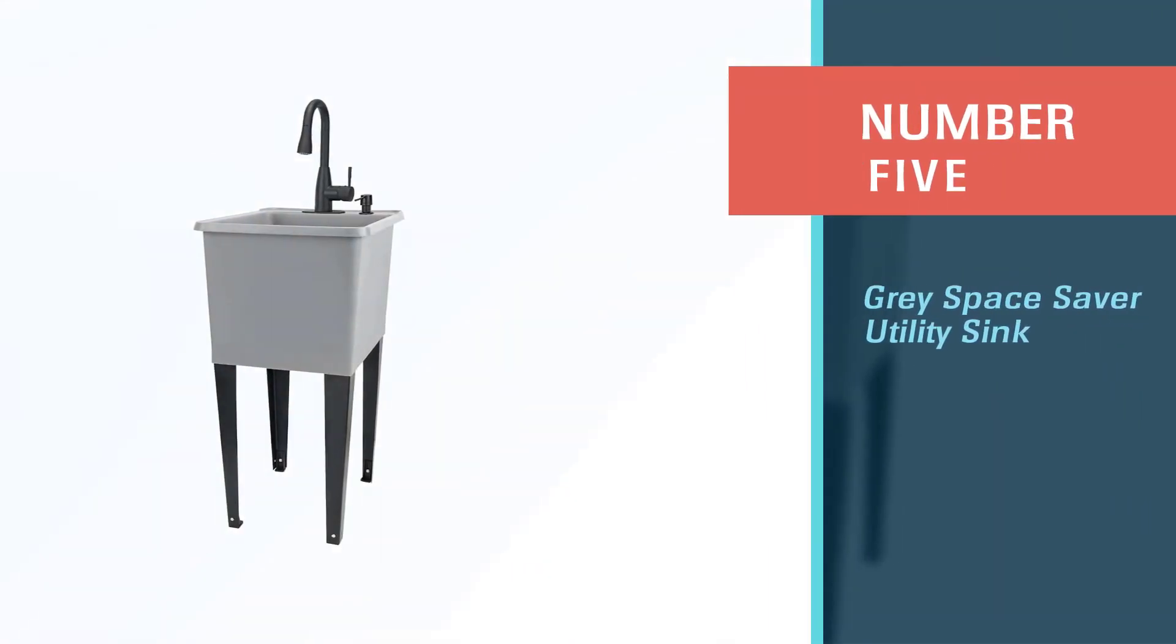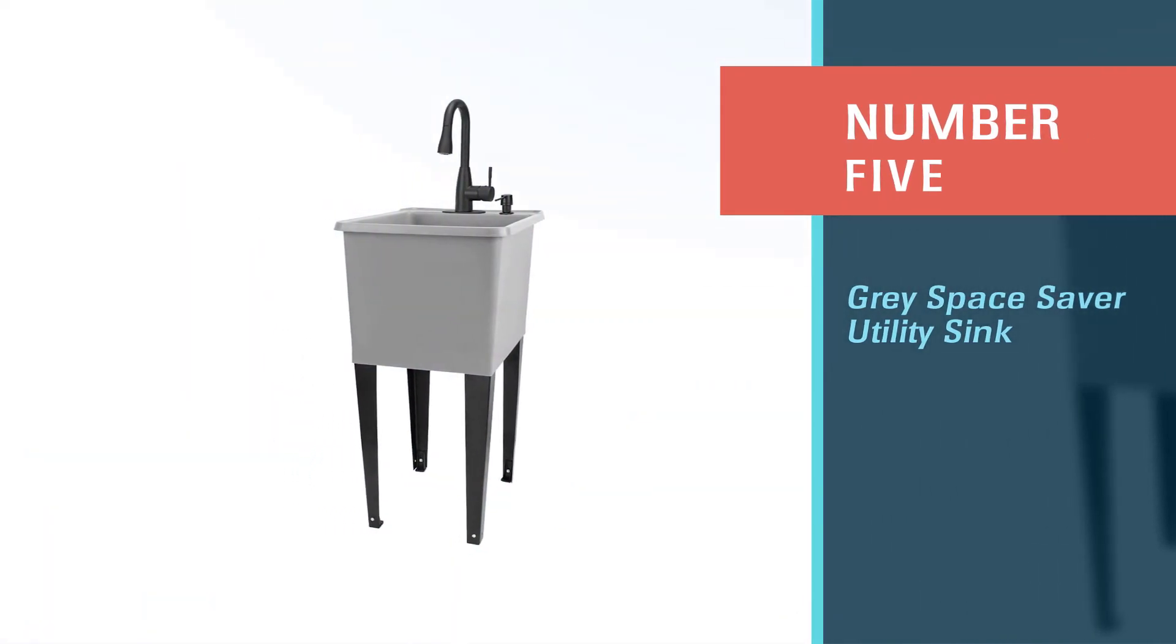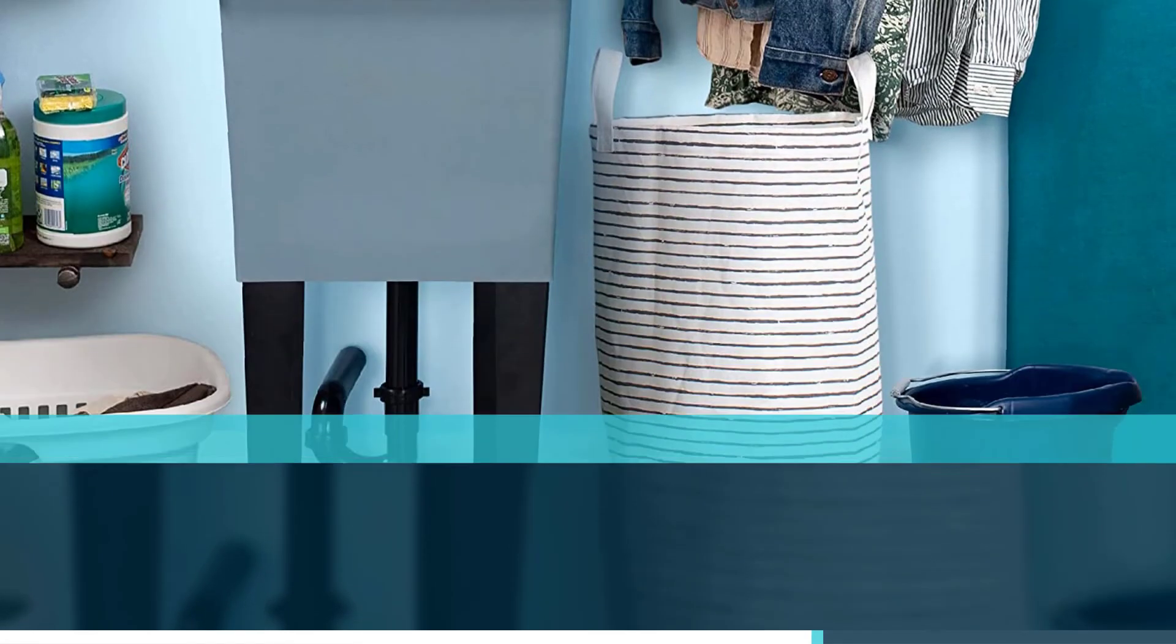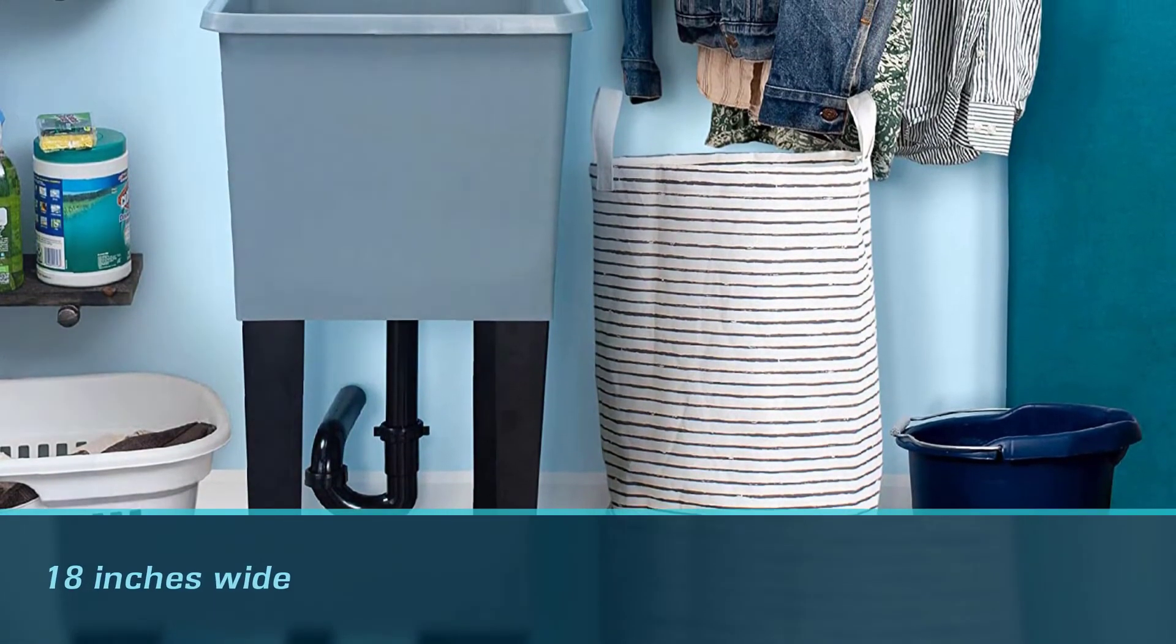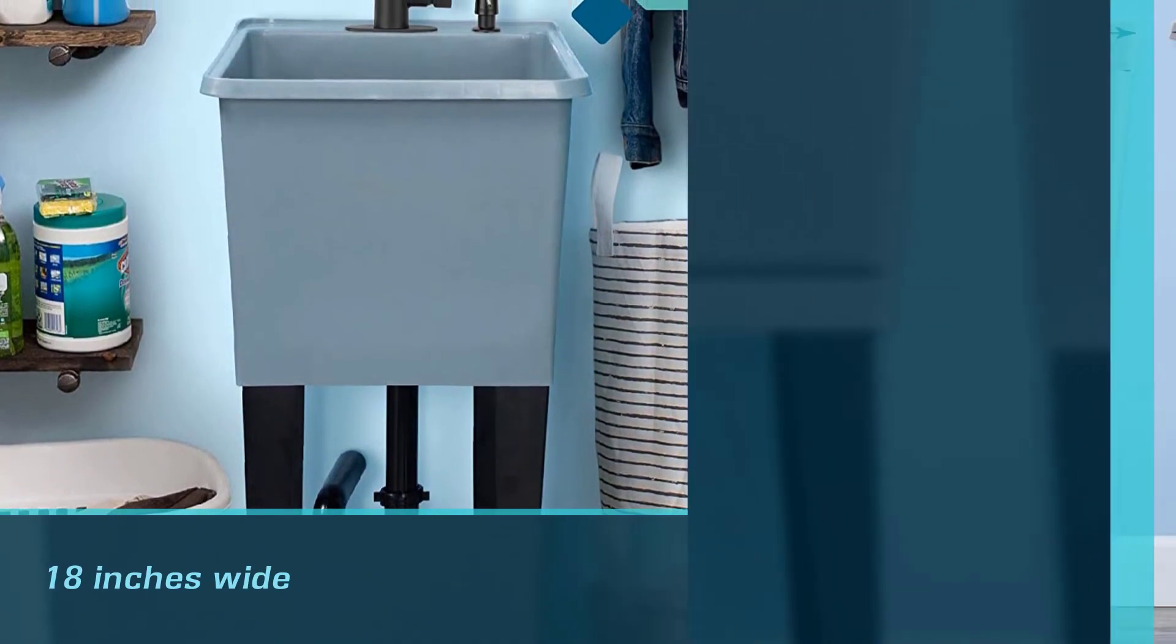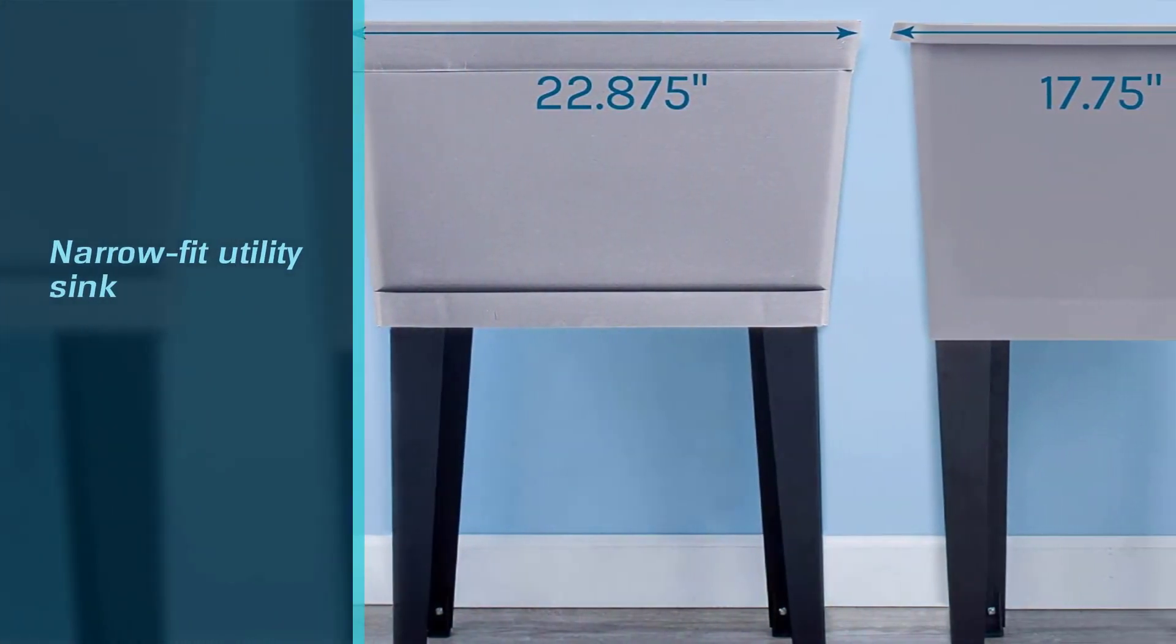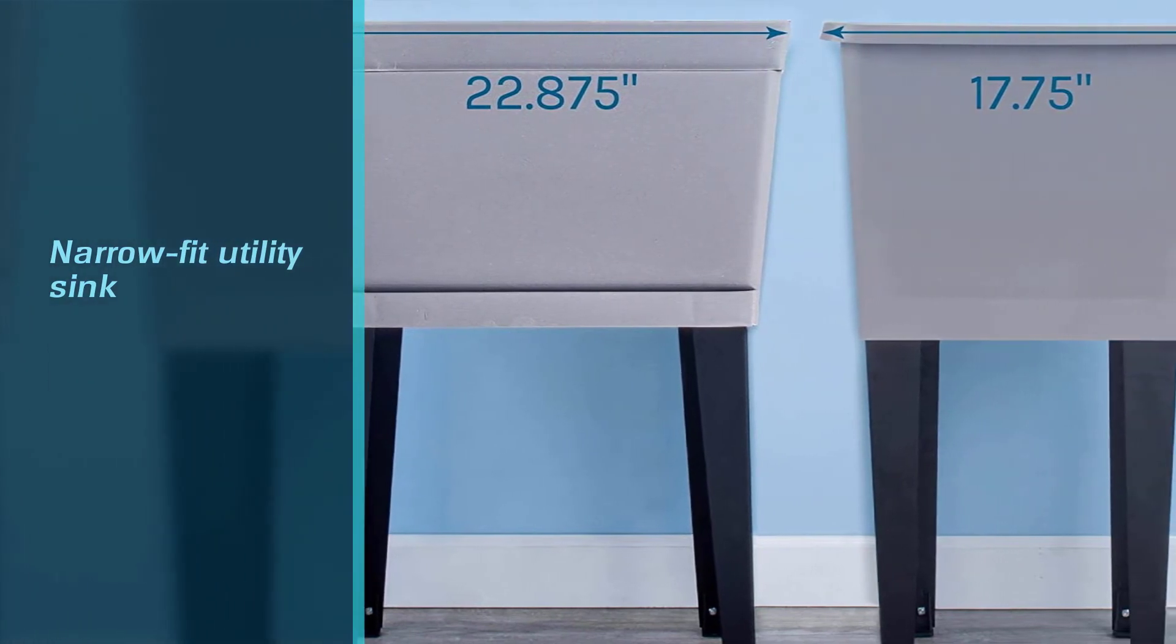Number five: Gray Space Saver Utility Sink. Utility sinks tend to be rather large, which makes adding one to a smaller laundry room a challenge. At less than 18 inches wide and just about 23 inches from front to back, this narrow-fit utility sink is ideal for tight spaces.